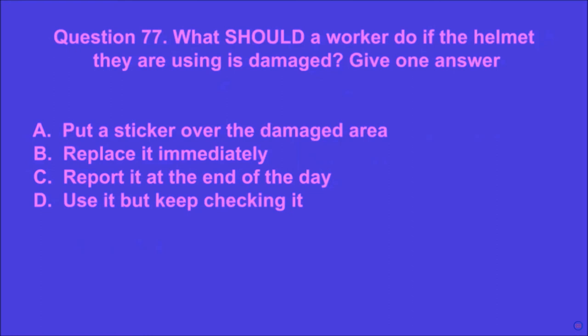Question 77: What should a worker do if the helmet they are using is damaged? Give one answer. A: put a sticker over the damaged area, B: replace it immediately, C: report it at the end of the day, D: use it but keep checking it. B is the correct answer.